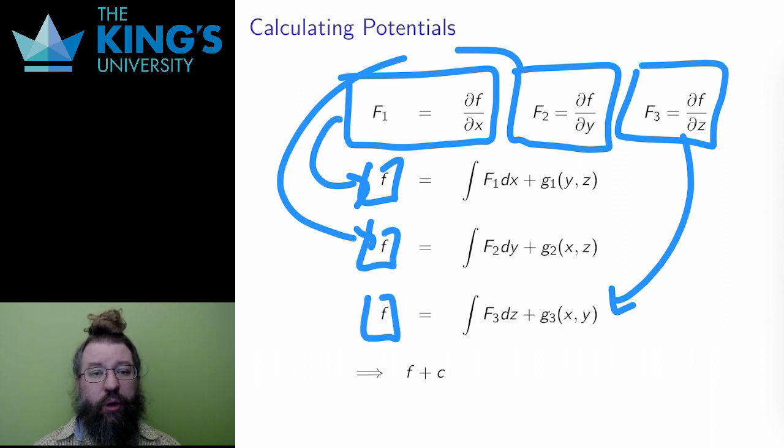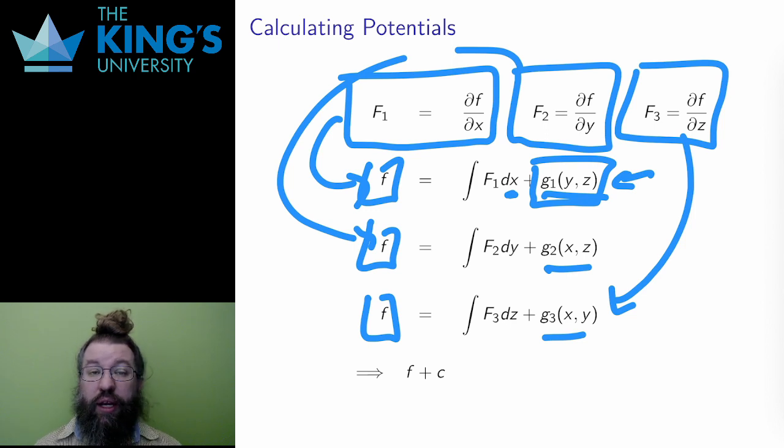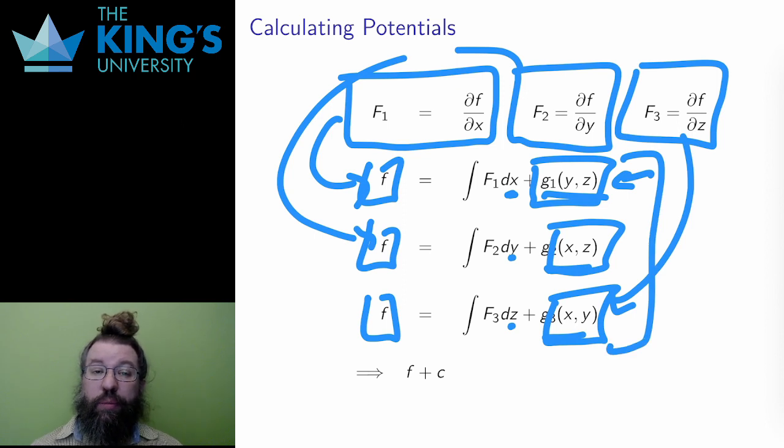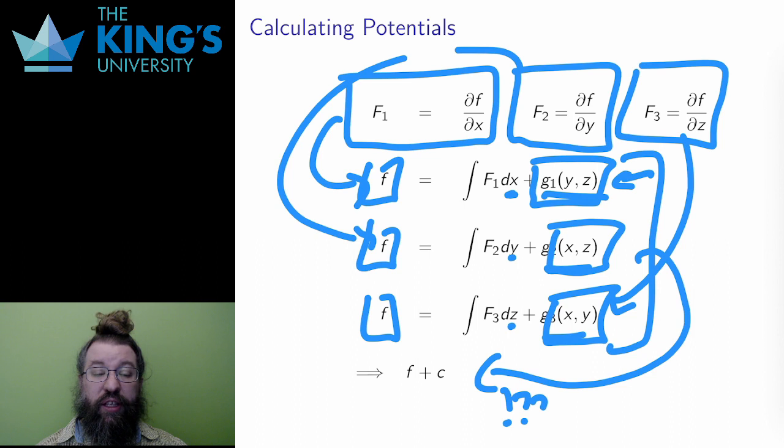Each of these should produce the original potential lowercase f. The trick here are the constants. Since the first integral is an x-integral, the constant of integration might actually be a function of y or z. The x-derivative would have destroyed anything without an x in it, so, going backwards, I might have any function whatsoever in y and z here. Likewise, the integral of F2 might have any function of x or z added to it, and the integral of F3 the same for x and y. I have three equations for lowercase f for the potential, but I have to put them together to make a single function, or at least up to plus c, where c is an actual constant. A potential will always have this constant integration, which I will talk more about later.